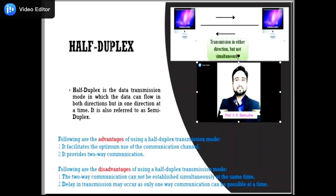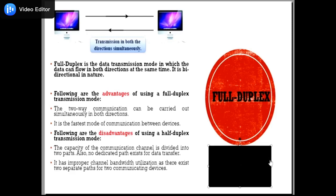Next, we want to discuss about full-duplex mode. In full-duplex mode, the communication is bi-directional — the data flows in both directions. Both stations can send and receive data simultaneously. Full-duplex mode has two simplex channels: one channel has traffic moving in one direction and another channel has traffic flowing in the opposite direction. Full-duplex mode is the fastest mode of communication between devices. The most common example is the telephone network, where two people communicating via phone lines can both talk and listen at the same time.